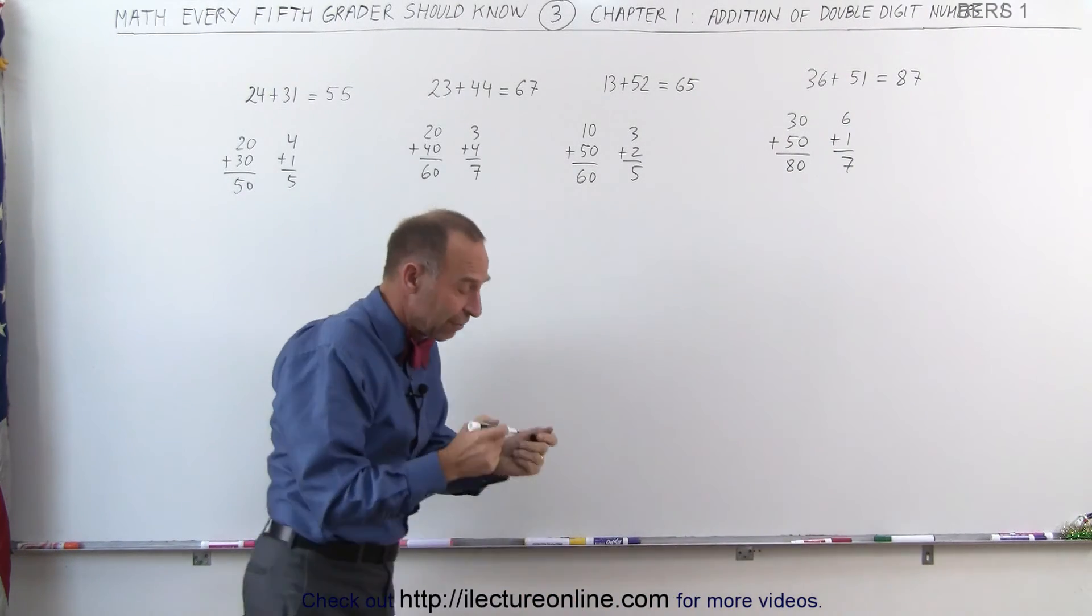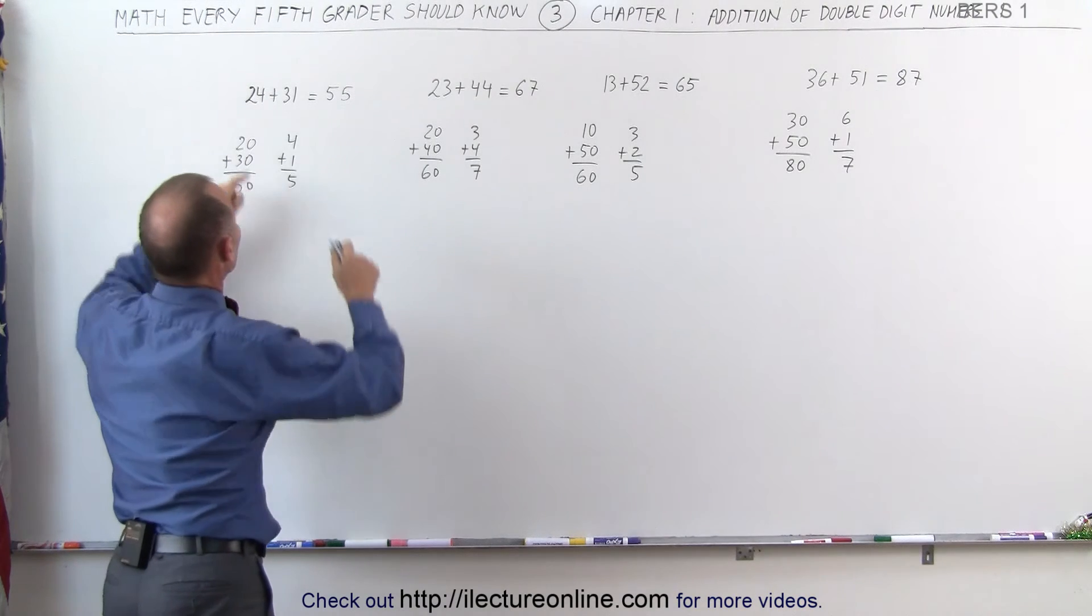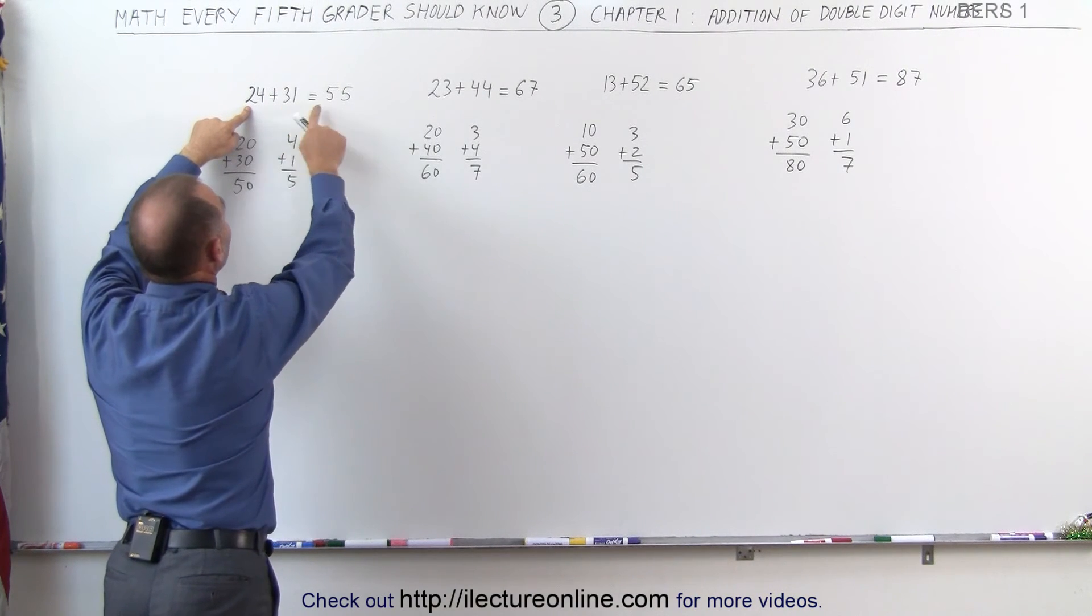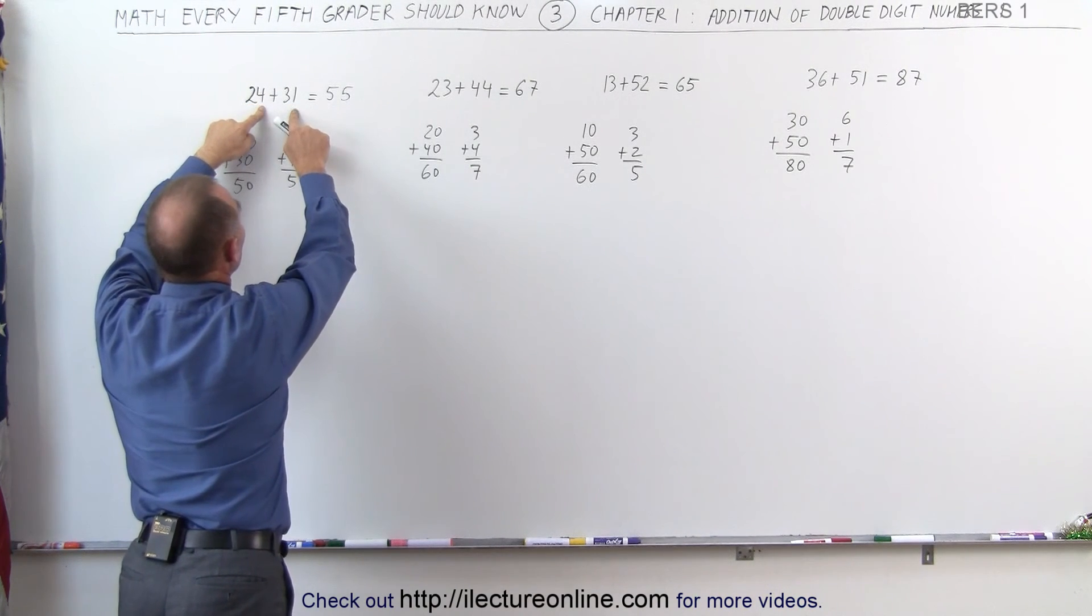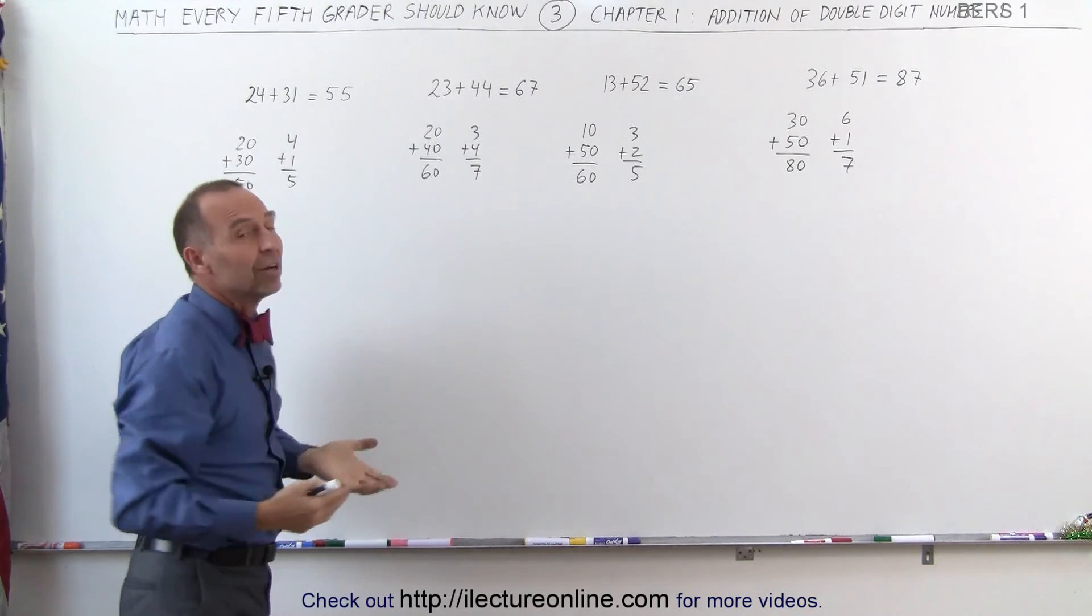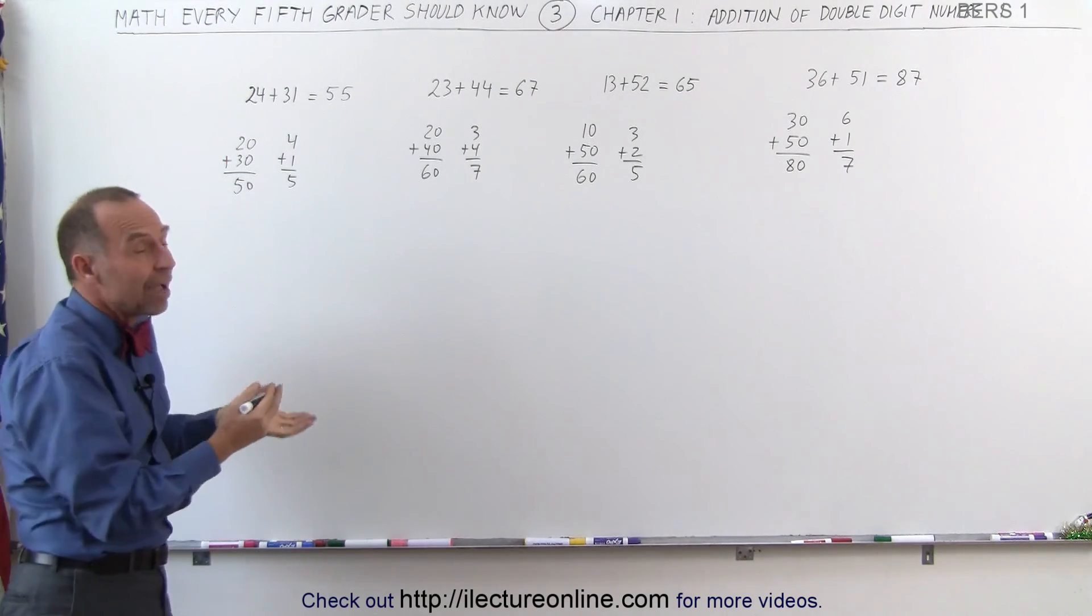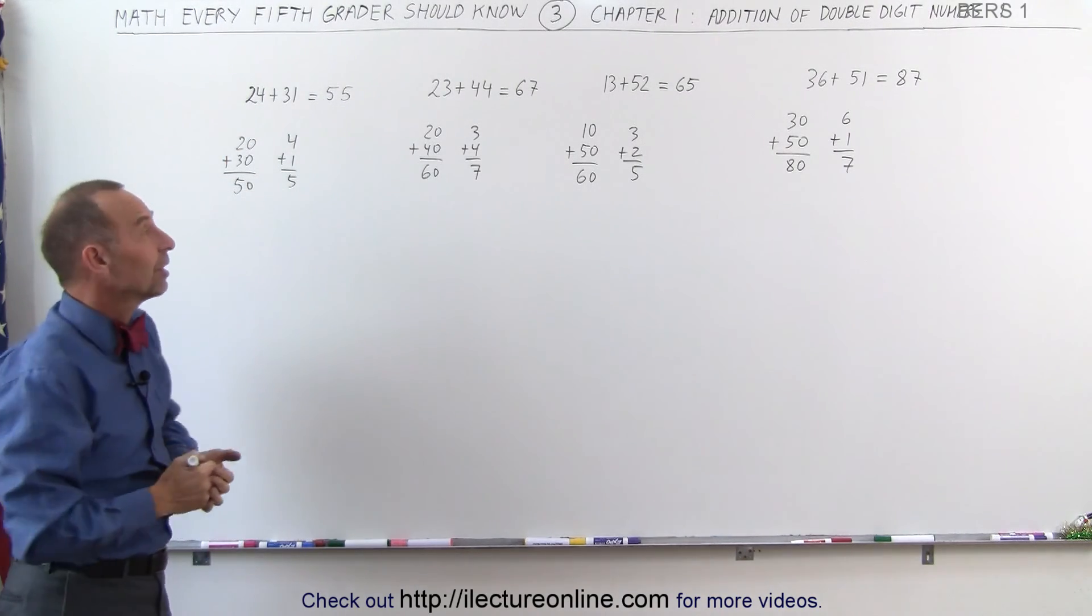So you can see that when you have double-digit numbers, and when you add the first two numbers together, it's less than 10, you add the second two numbers together, it's less than 10, that makes it fairly easy to do that. And that's the first type of double-digit additions that we can encounter.